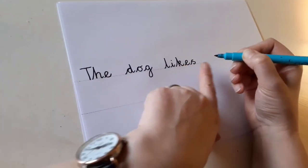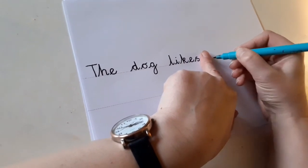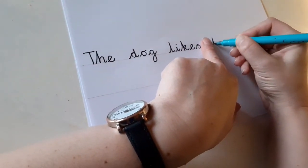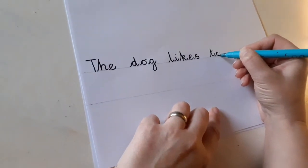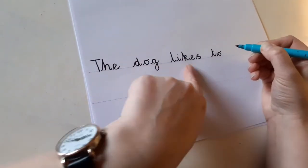The dog likes. Finger space. 'To' is a word that we've practiced lots of times. A lowercase t this time, not a capital one. A lowercase one because it's the middle of the sentence, not the beginning. The dog likes to.